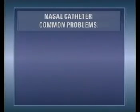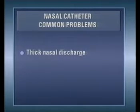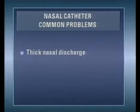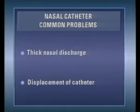There are two possible problems with the nasal catheter. Thick nasal discharge may block the flow of oxygen, either blocking the tubing or obstructing the nasal passages, causing the child to breathe through the mouth. There is also a small risk that the nasal catheter may become displaced into the esophagus, which could result in gastric distension.